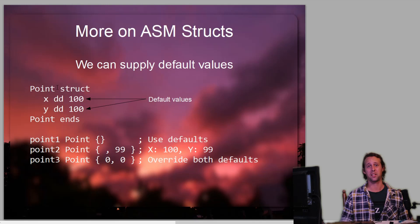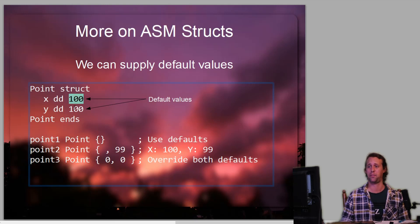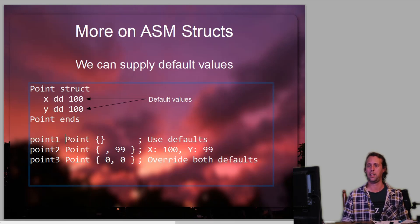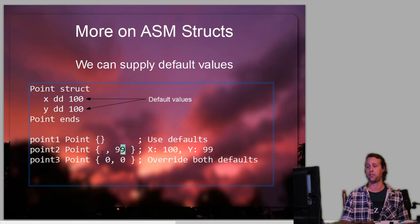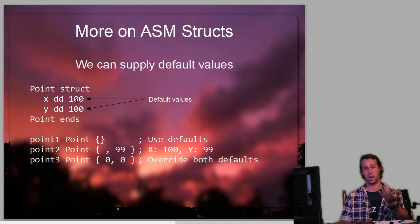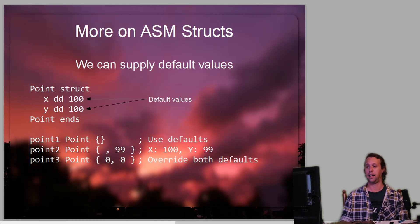We can supply default arguments to our structures. If we've got a structure called 'point' and instead of a question mark we specify values like 100, those are called the default arguments. If we define 'point1' with the structure name and then empty curly braces, that means use the default values — so point1.X would be 100 and point1.Y would be 100. In the second example, I've put a comma for the X value, meaning use the default argument of 100, and set Y to 99. If you want to override both default arguments, you can specify two parameters.